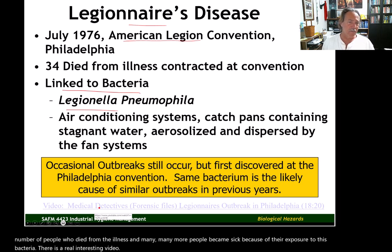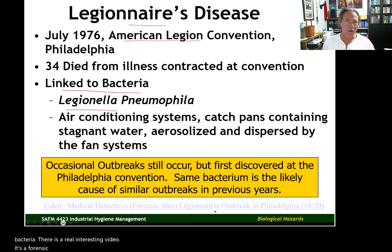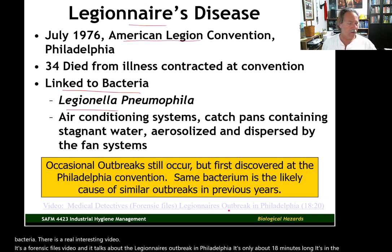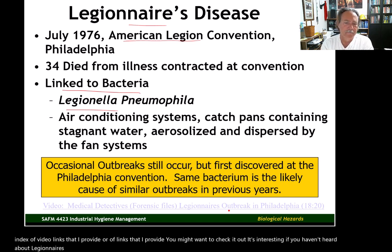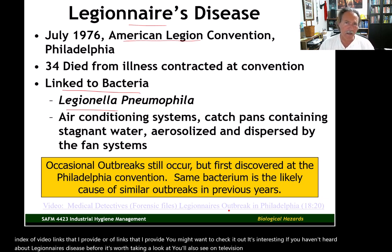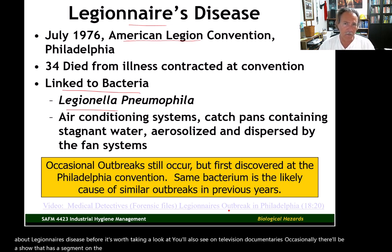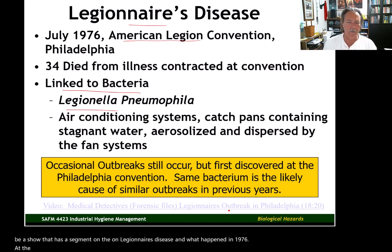Occasional outbreaks still occur. It probably wasn't a new bacteria — there had likely been similar outbreaks in previous years that went undetected. What got it detected here was the number of people who died from the illness, and many more became sick. There is a forensic files video about the Legionnaire's outbreak in Philadelphia — it's about 18 minutes long and is in the index of links provided. It's worth checking out if you haven't heard about Legionnaire's disease before.